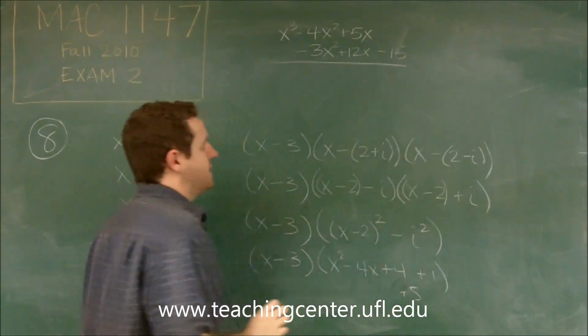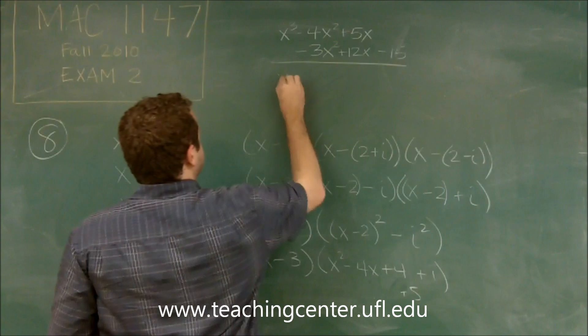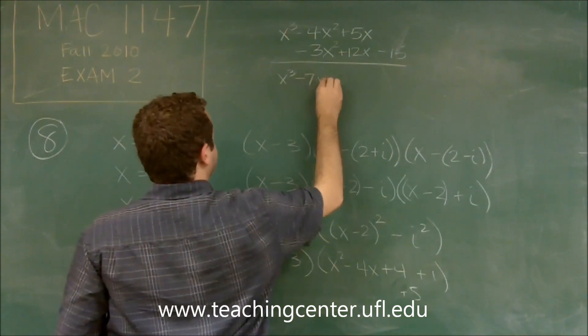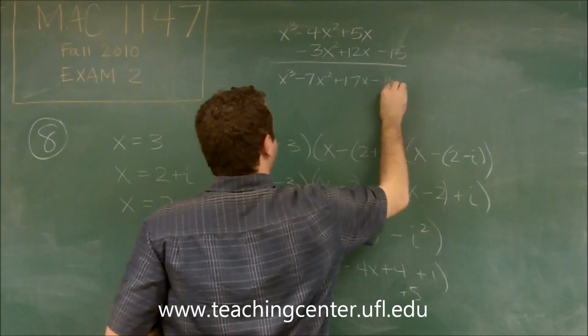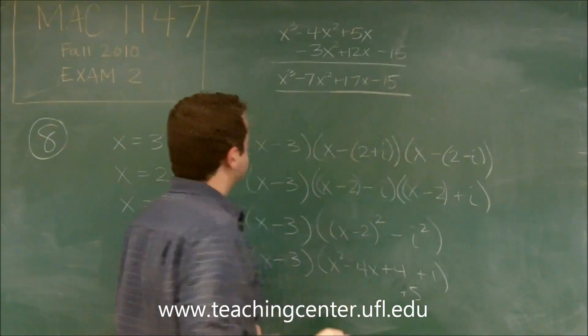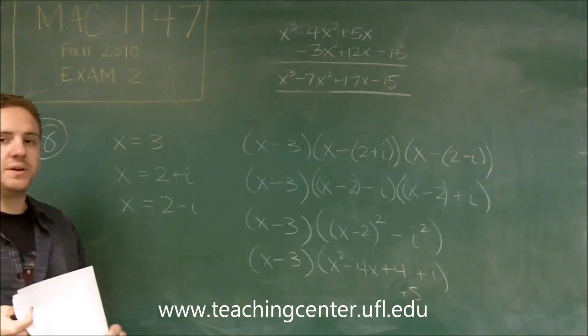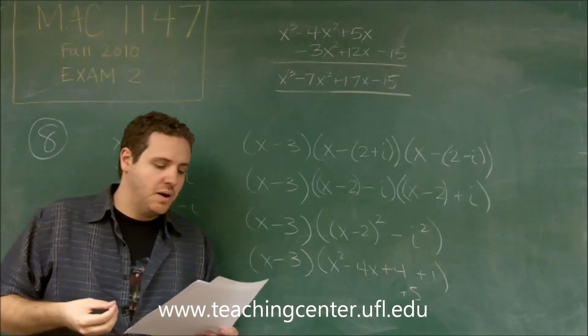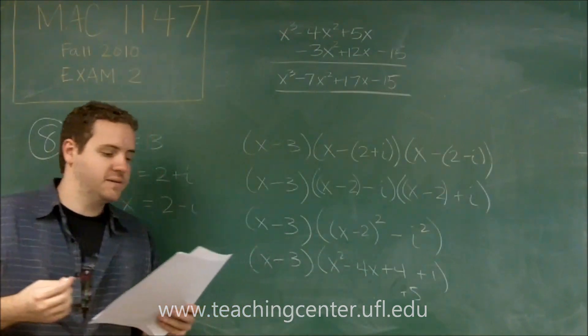And minus three times five minus fifteen. So you can see now if you just add all these together, it's already lined up. So we're going to get x cubed minus seven x squared plus seventeen x minus fifteen. And that's our polynomial that has the three zeros there. So you can see that that is answer choice B in this case.